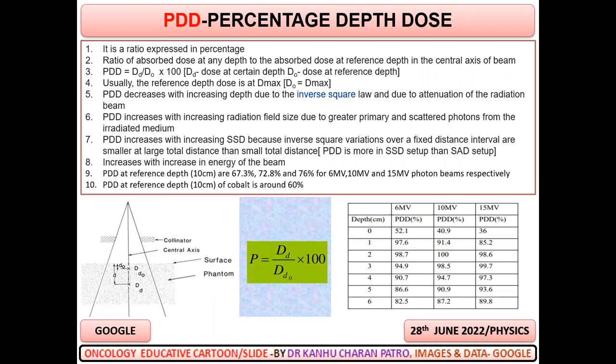It is a ratio expressed in percentage — the ratio of observed dose at any depth to the observed dose at a reference depth in the central axis of the beam. Remember, it is in the central axis of the beam.